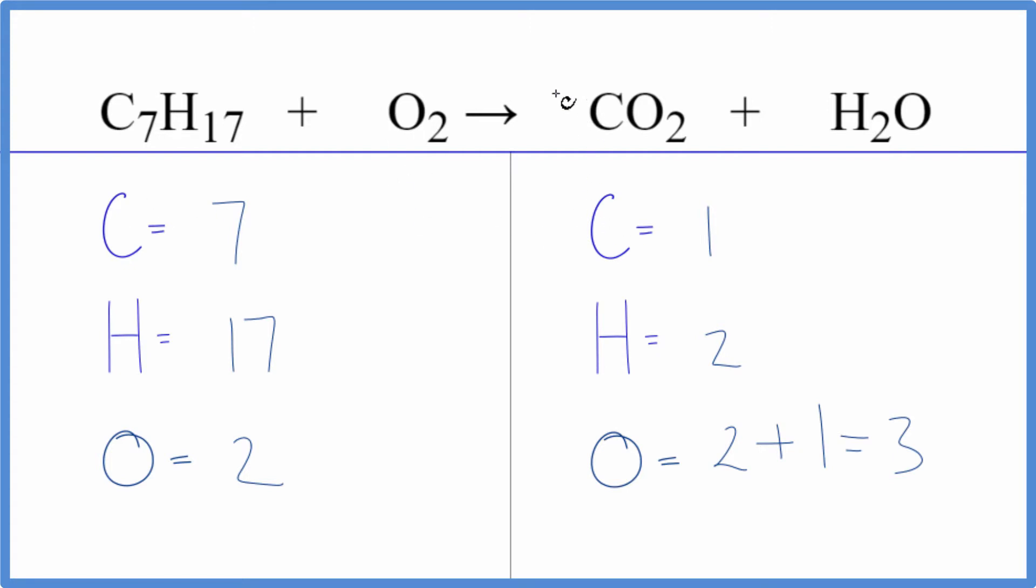We'll do the carbon, put a seven as our coefficient here, one times seven. So we have seven carbons, and those are balanced. We do need to update the oxygen. So now we have seven times two, that's 14 plus the one in the water there. That gives us 15.